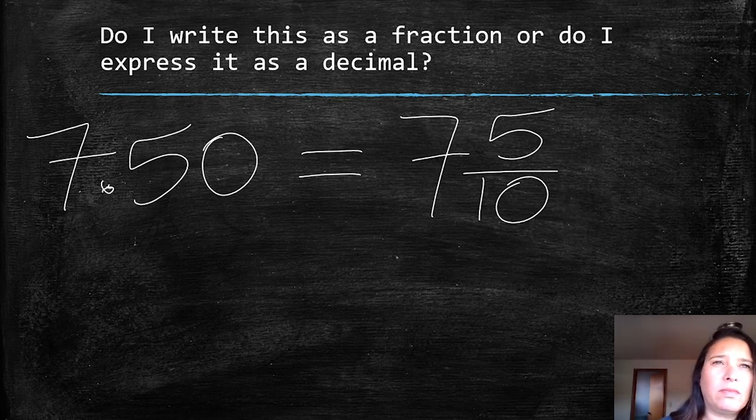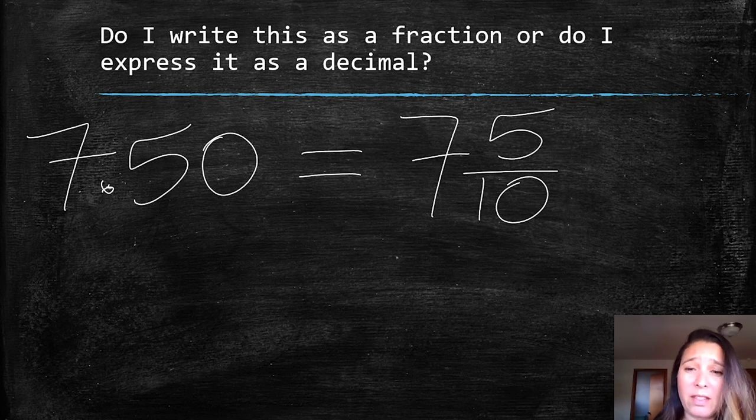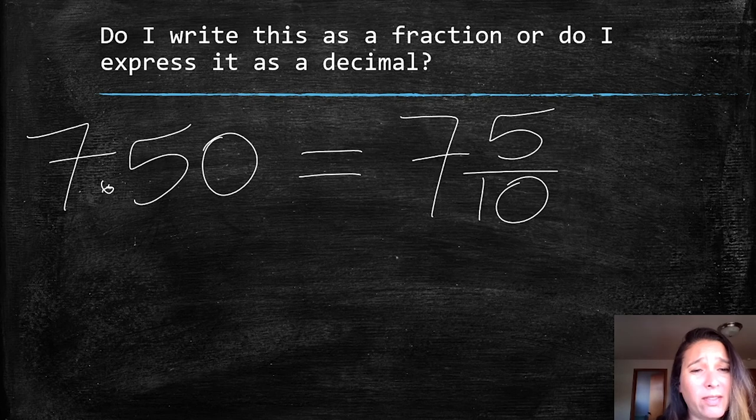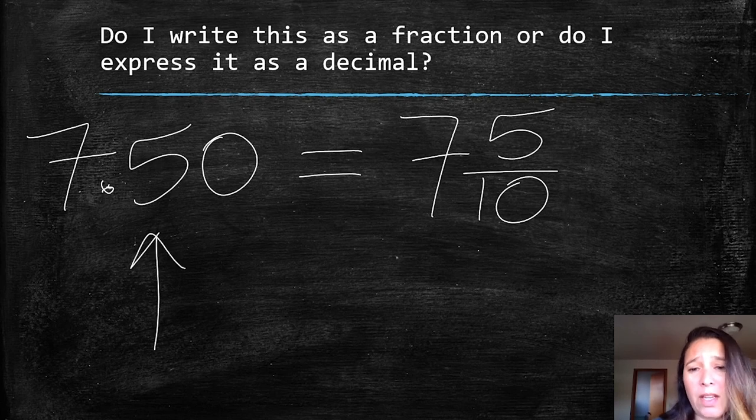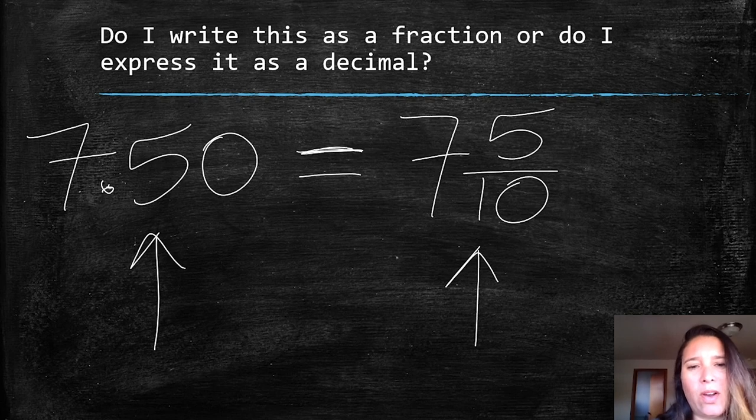But when we're talking about money we're using decimals and I want you to think about why that might be. Now when we're measuring things, especially when we're using rulers, if I was measuring a room or some fabric or how far I walked somewhere, sometimes we use decimals and sometimes we use fractions. The important thing to remember is that these two are equivalent, that they are different expressions of the same value.